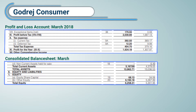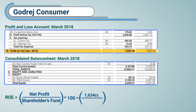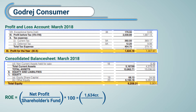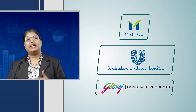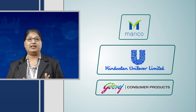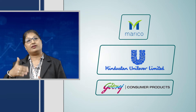The net profit of Godrej Consumer from the March 2018 balance sheet is Rs. 1,633 crores and total equity is Rs. 6,258 crores. Therefore, according to the formula, net profit divided by total equity multiplied by 100, we get a return on equity of 28.25%. After analyzing all three companies, we can see that Hindustan Unilever is the one running its business most efficiently and thus making the highest return on equity.